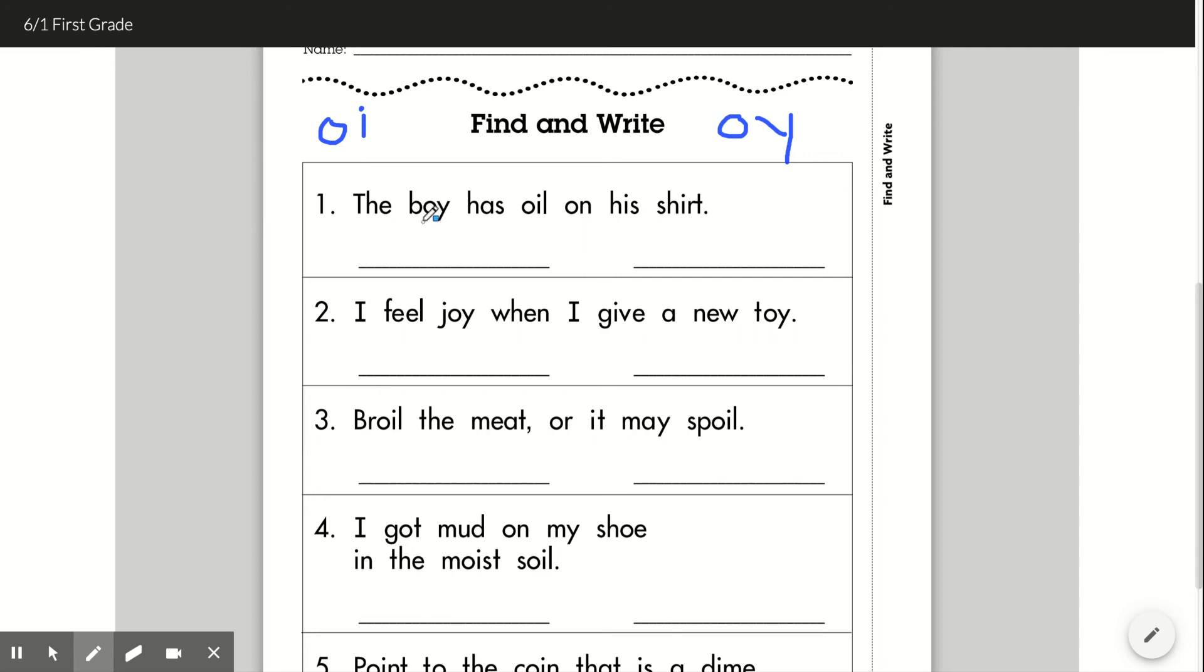The boy has oil on his shirt. Which words sound like oi? Boy. That's an oi word. And oil. That's an oi word. So I'm going to write boy and oil.